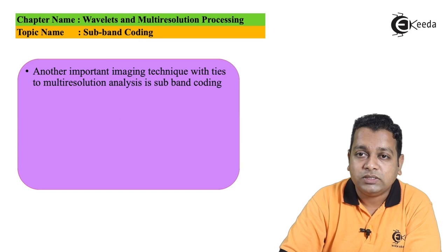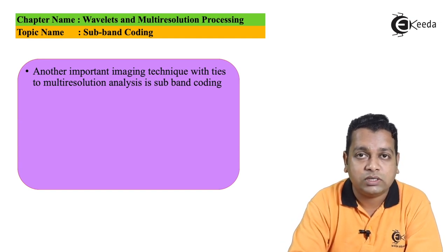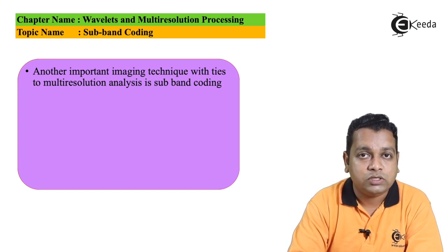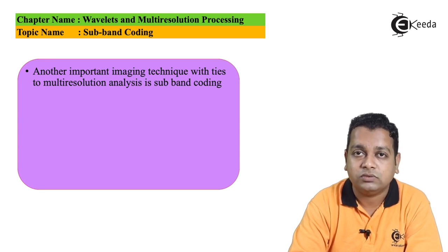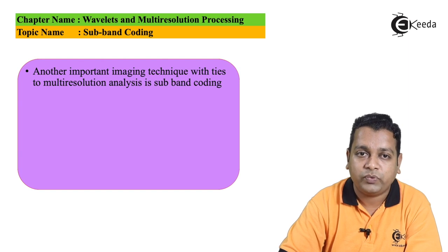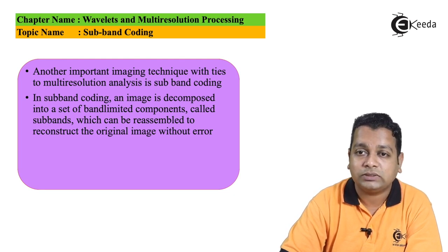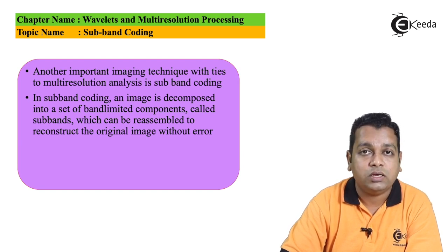Subband coding is another important technique tied to multi-resolution analysis. Multi-resolution analysis allows information that may be undetected at one resolution to be detected at another resolution — that is the advantage of MRA. In subband coding, an image is decomposed into a set of band-limited components called subbands, which can be reassembled to reconstruct the original image without any kind of error.